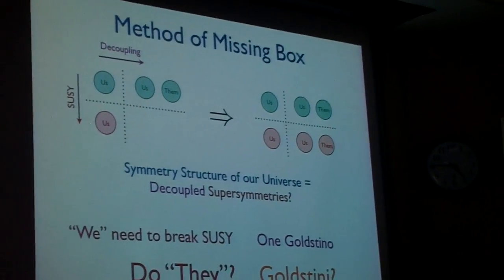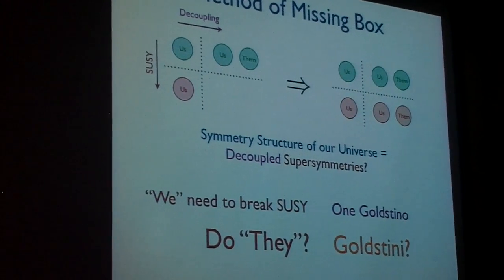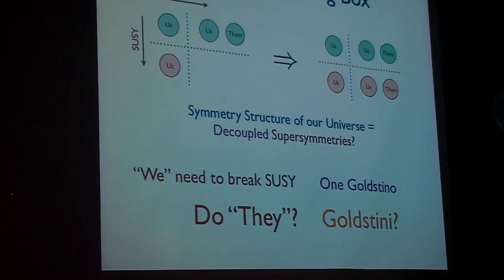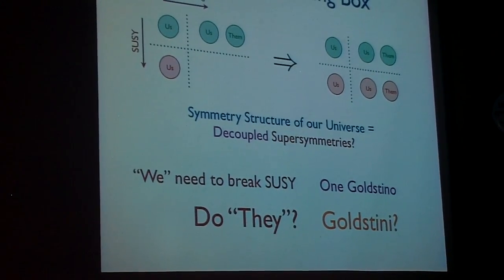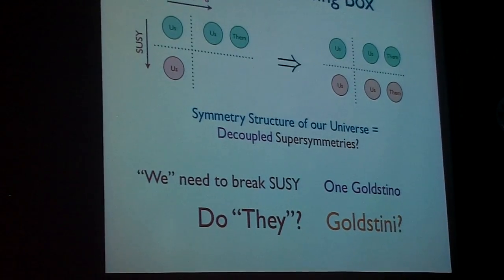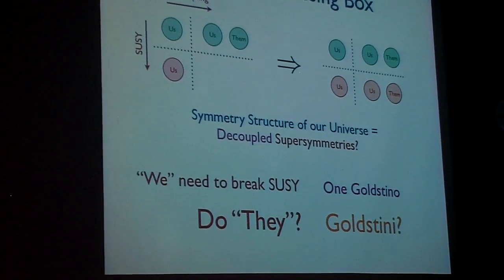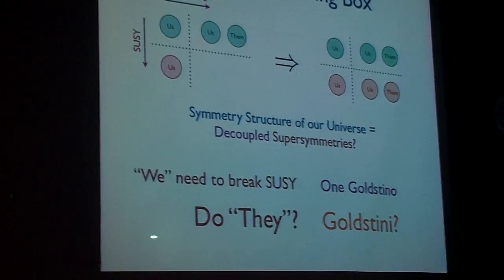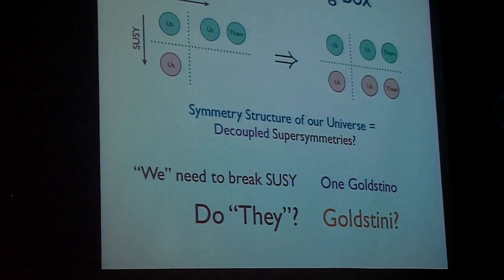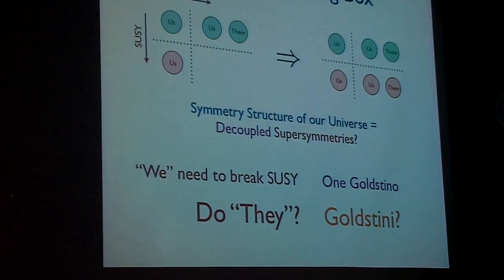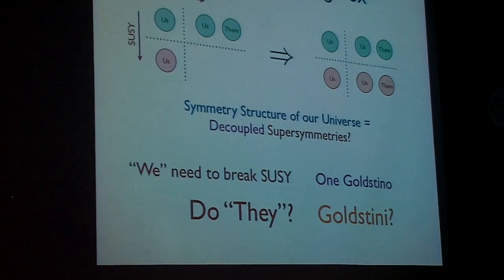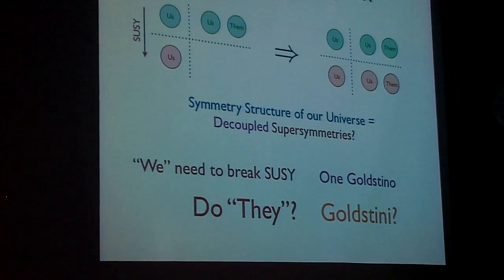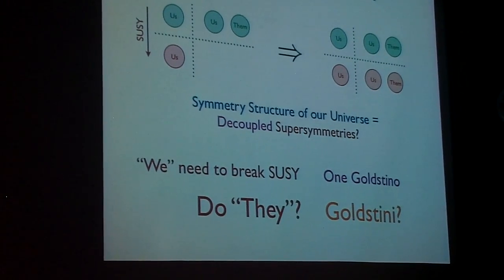You might say, okay, why should I be interested in decoupled supersymmetries? What makes this interesting phenomenologically is that we know that we have to break our supersymmetry. Our muon and smuon, they can't have the same mass. That implies the existence of one Goldstino. Well, what about them in their own hidden sector? Do they have to break supersymmetry? And would we know about it? So if they were to break supersymmetry, then there would be a corresponding multiplicity of Goldstini, multiple fields corresponding to the breaking of supersymmetry. But because supergravity couples everything together, it's possible that these multiple Goldstini, we might actually be able to see both of these degrees of freedom at the LHC.